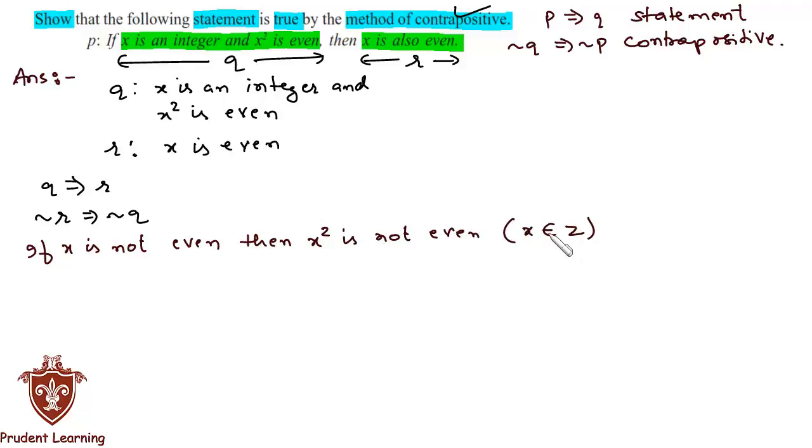Now all we need to do is prove this statement. So let us assume x is an odd number. Since x is not even, it must be odd. Therefore, we can write x as 2m + 1 for some integer m.